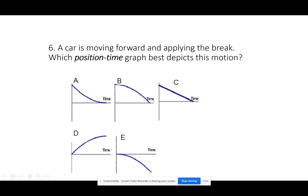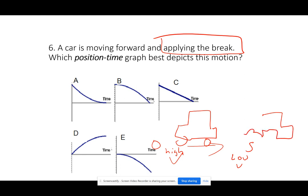A car is moving forward and applying the brake. Which position time graph best depicts this motion? Go ahead and take a look. Let me give you some hints. The car is moving forward, so let's say they go from 0 to 5, going this way. They apply the brake. So at the beginning, their velocity is higher. And at the end, it's a lower velocity. If they apply the brake, maybe by the end they're completely stopped and they just stop wherever they end up. Which one would that be?